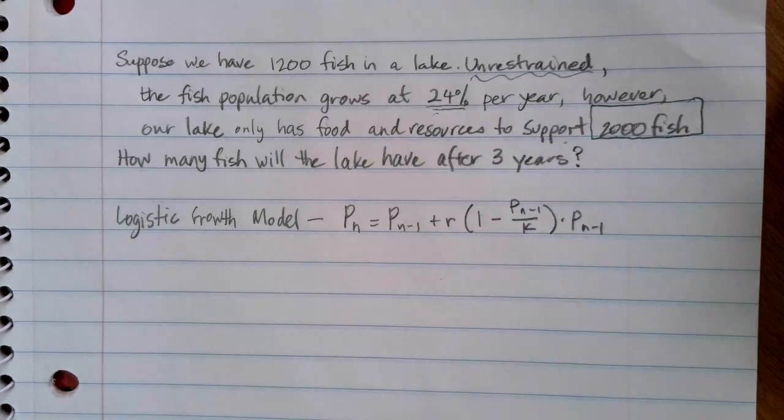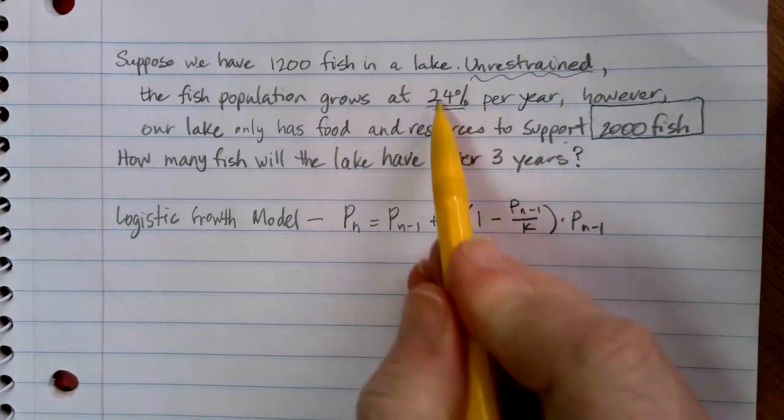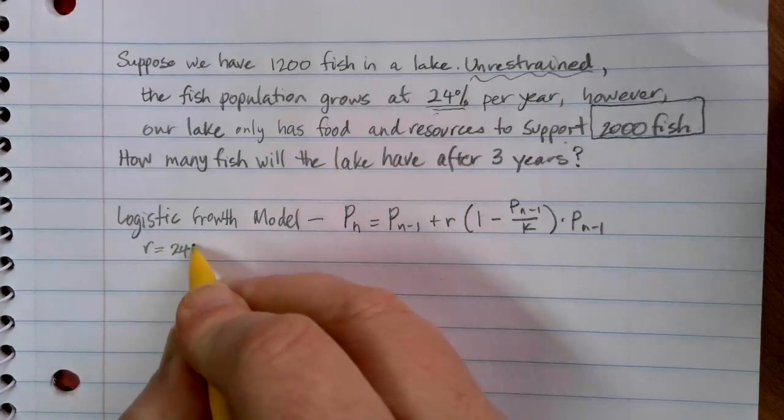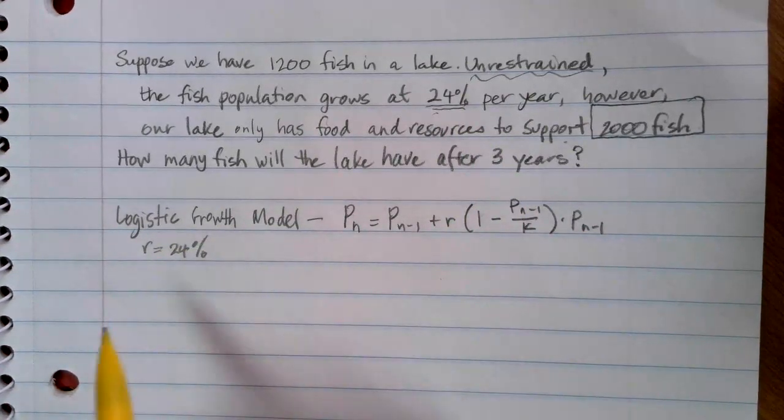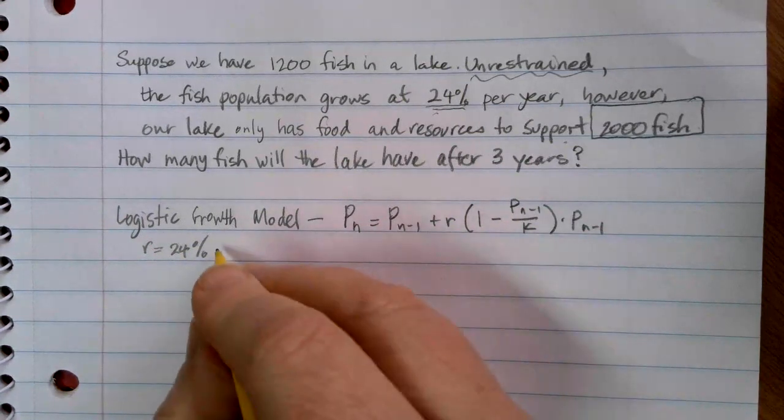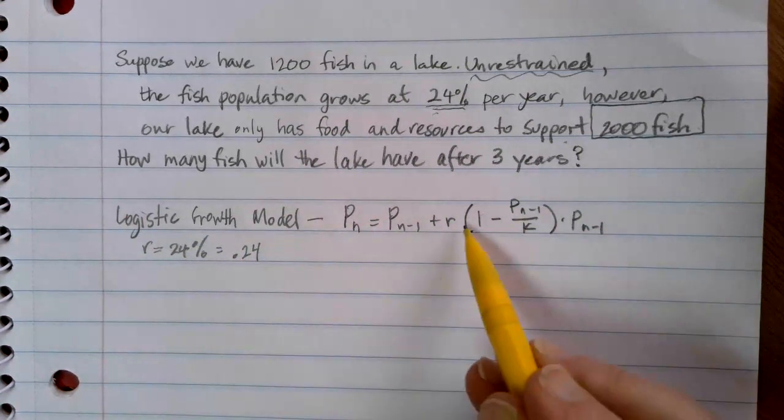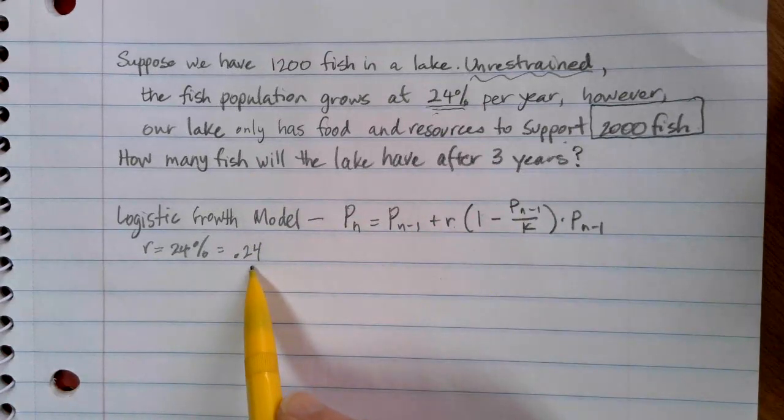Let's identify our different variables here. The percentage rate is our r value. So that's 24%. However, just like any equation, we can't leave our percentages in percentage form. We need to change them to our decimal form. So where we see r in the equation here, we're going to substitute 0.24.